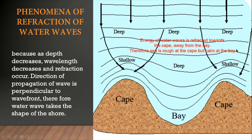The wave front is no longer parallel. It slowly curves more and more. As it approaches the shore, you see the wave front is now the same shape as the shore. So water waves take the shape of the shore because as depth decreases, wavelength decreases and refraction occurs. The direction of propagation of the wave is perpendicular to the wave front, so the wave is refracted and takes the shape of the shore.